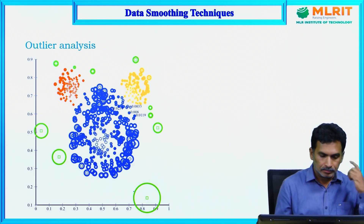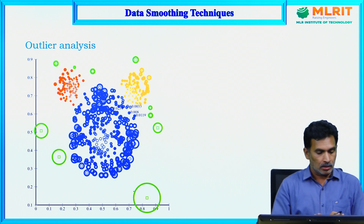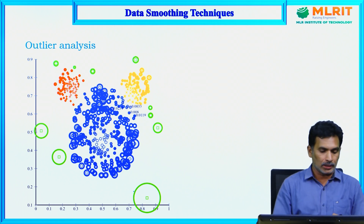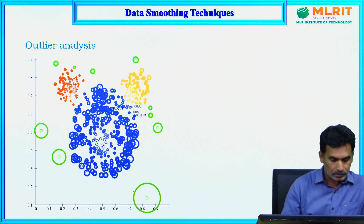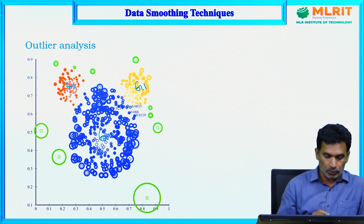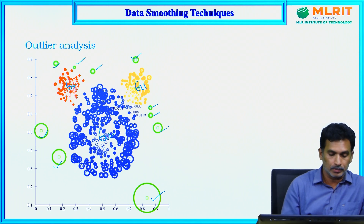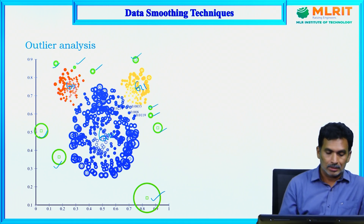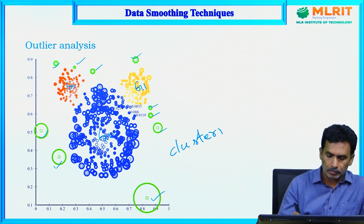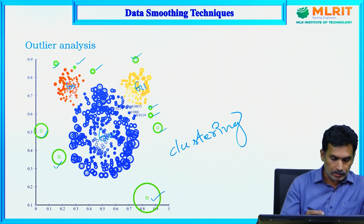Another technique is outlier analysis. An outlier is simply an extreme value. We typically use the clustering technique to identify outliers. From this plot we can see three main groups, and there are a few other data points that do not belong to any group — these are the possible outliers. Clustering is the best approach to identify outlier values.